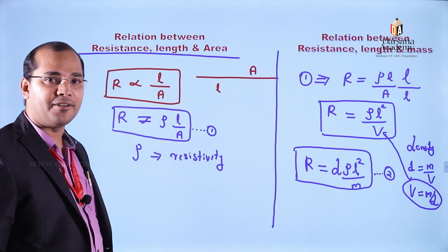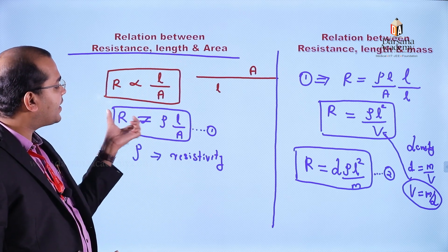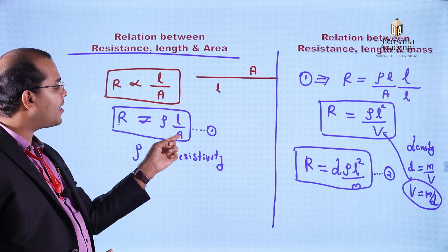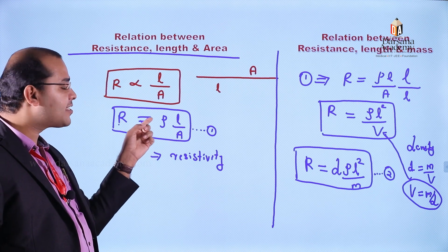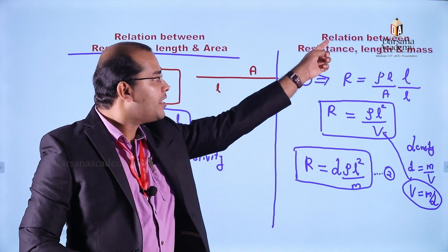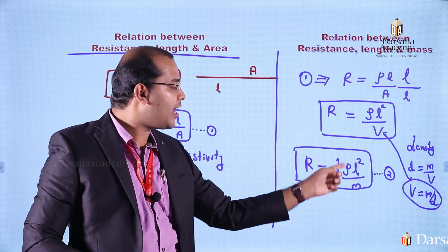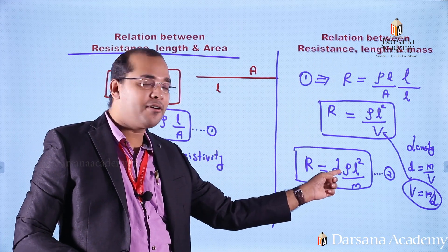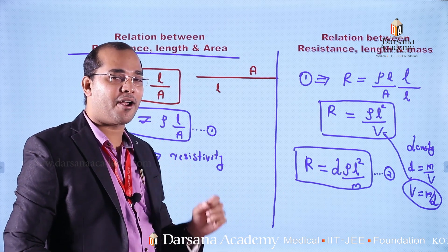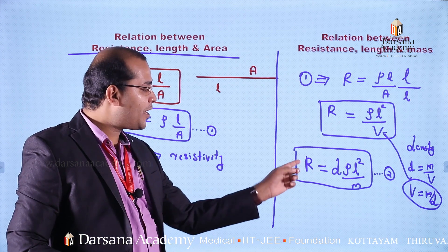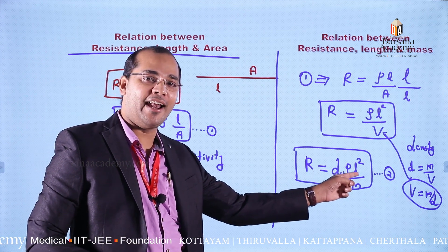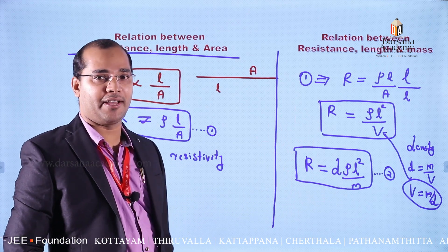We now have two equations. Equation 1 gives the relationship between resistance, length, and area of cross section: R equals ρL divided by A. Equation 2 gives the relationship between resistance, length, and mass: R equals DρL² divided by M. Here D is density, ρ is resistivity, L is length, and M is mass of the wire.